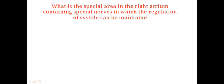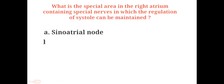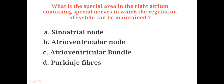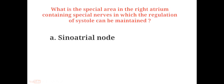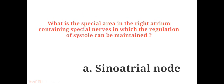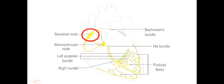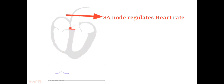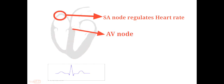What is the special area in the right atrium containing special nerves in which the regulation of systole can be maintained? A. Sinoatrial node, B. Atrioventricular node, C. Atrioventricular bundle, D. Purkinje fibers. The answer is A. Sinoatrial node. The SA node is literally the pacemaker of the heart. It regulates heart rate through specialized conduction, first communicating to the atria, then to the AV node, which communicates to the ventricles causing them to contract.